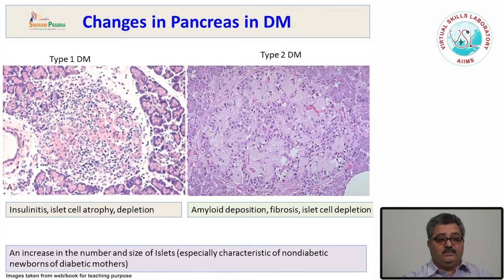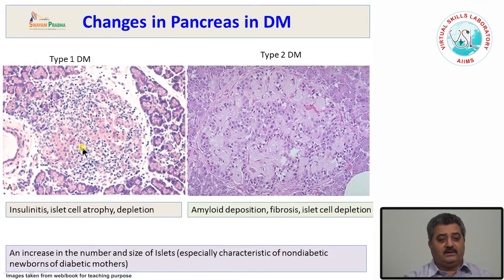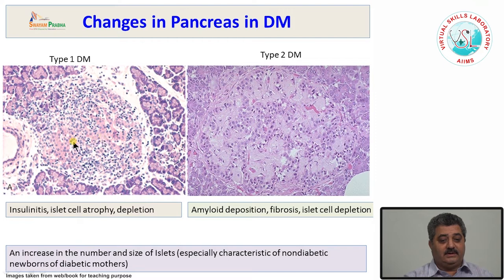The differences in pathology between type 1 and type 2 diabetes mellitus are seen mostly in animal models, experimental studies, and autopsies. In type 1 diabetes mellitus, there is inflammation in the islet cells — lymphocytes infiltrating between the islet cells, known as insulinitis. There is atrophy of islet cells, decrease in number, and at end stage, loss of islet cells.